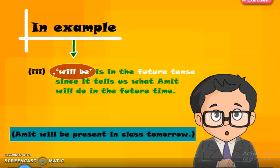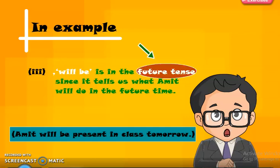In example three, 'will be' is in the future tense, since it tells us what Amit will do in the future time. In the third example, 'will be' or 'shall be' shows what is going to happen in the future — not what is happening now, not what has already happened, but what is going to happen. That is future tense.